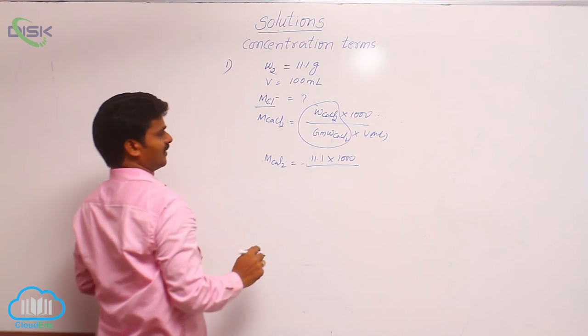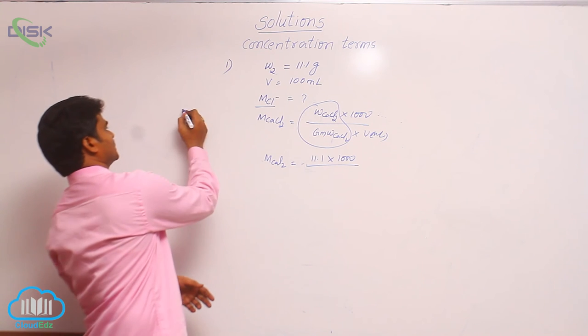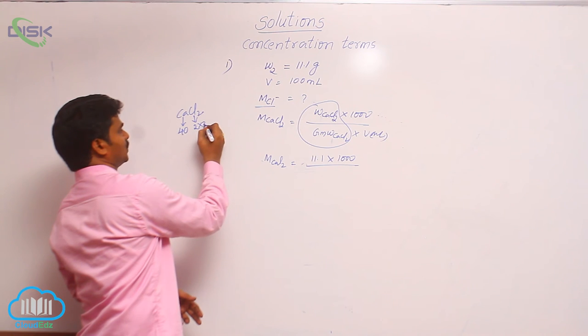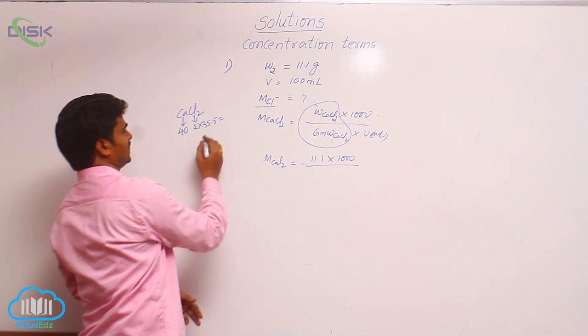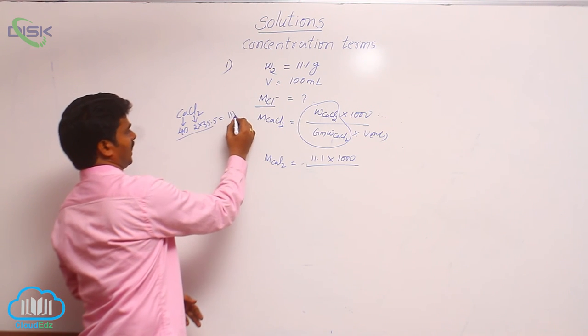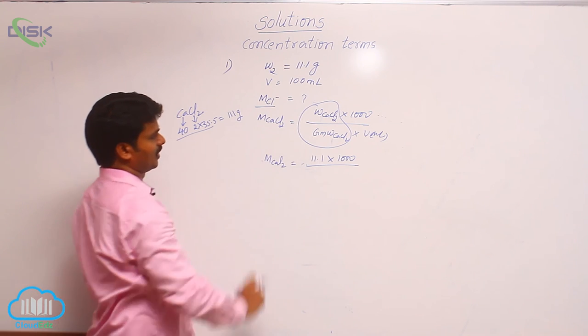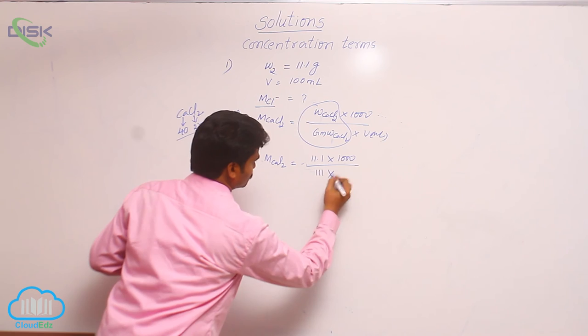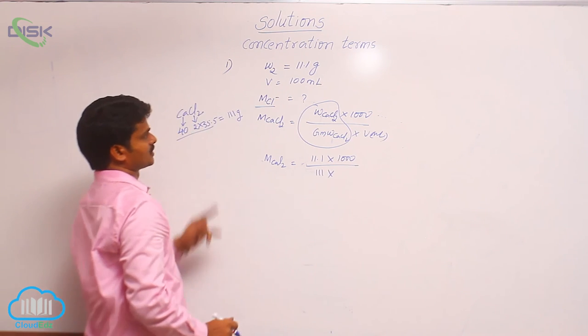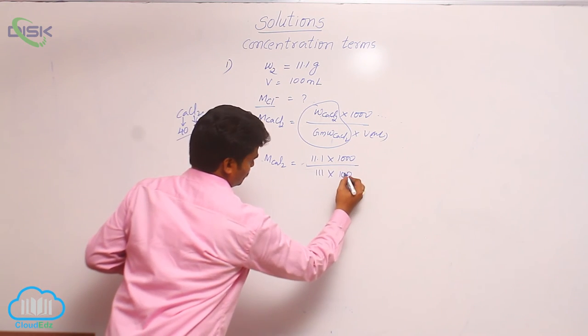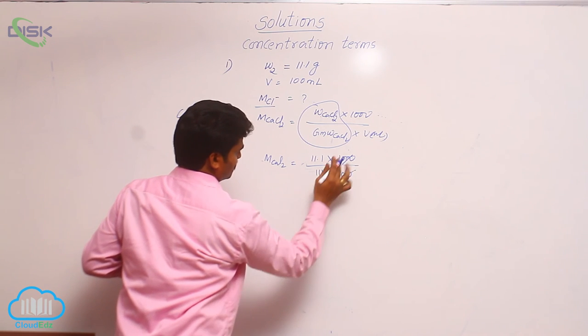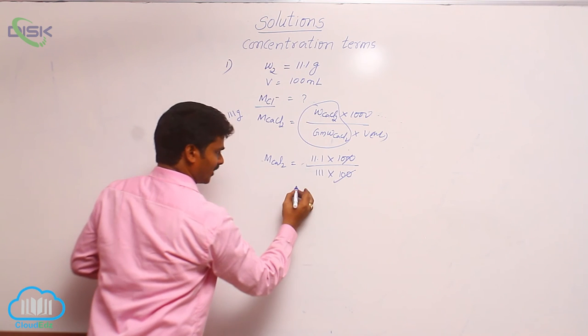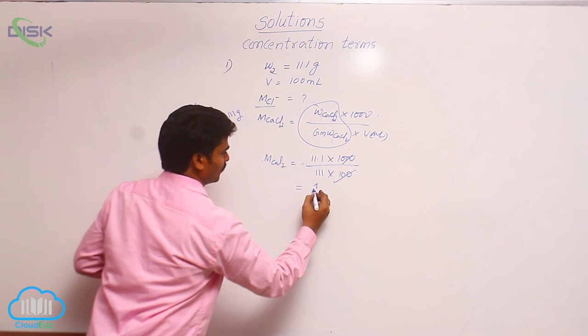What is the gram molecular weight of calcium chloride? CaCl2 - calcium 40, 2 chlorines 2 into 35.5, that means total 111 grams. So gram molecular weight of calcium chloride 111 into the volume of solution 100. So 100 into 1000, 10 times, that means 10 into 11.1, 111 by 111, that means 1 molar.